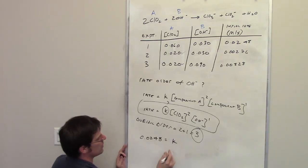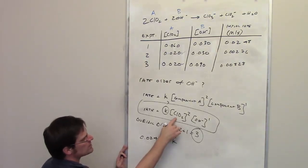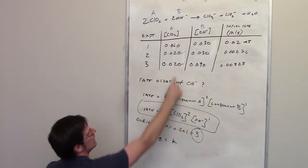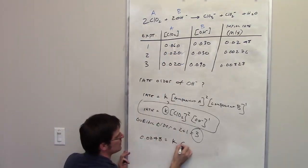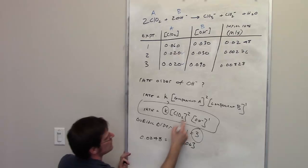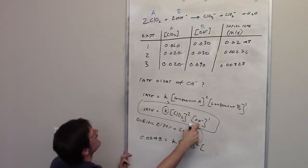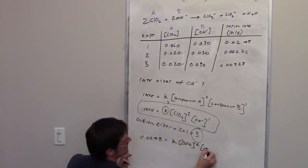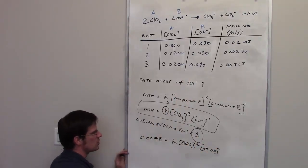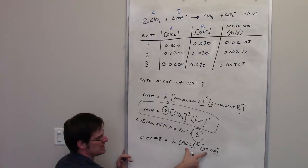In experiment 1, the rate is 0.0248. K, of course, we don't know. We're trying to figure out what that is. What was the concentration of chlorine dioxide in experiment 1? Well, it was 0.06, and that is going to be squared. What was the concentration of hydroxide in experiment 1? It was 0.03, and that's going to be raised to the first power. So all I really have to do is use algebra to figure out what K is by dividing this by these two guys.